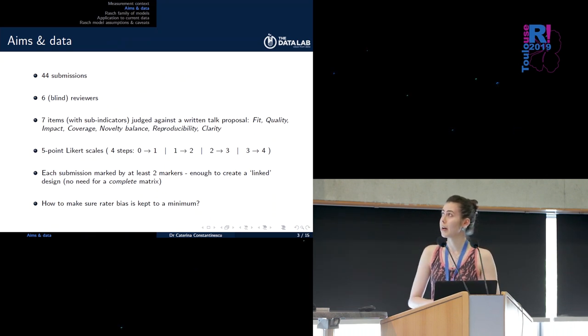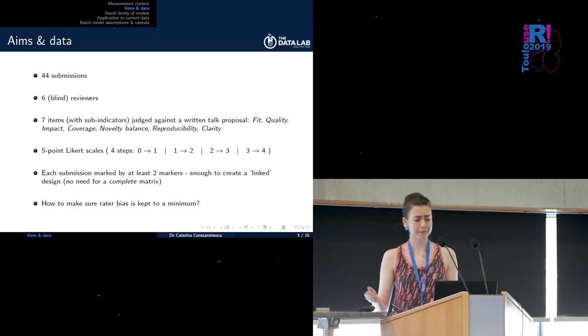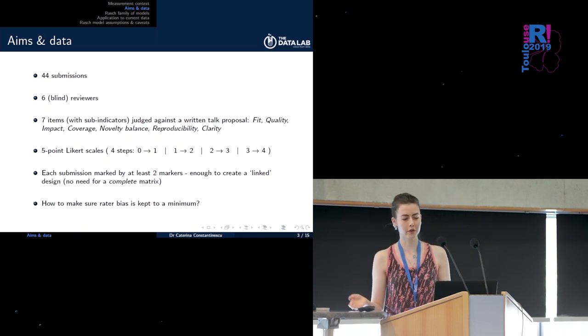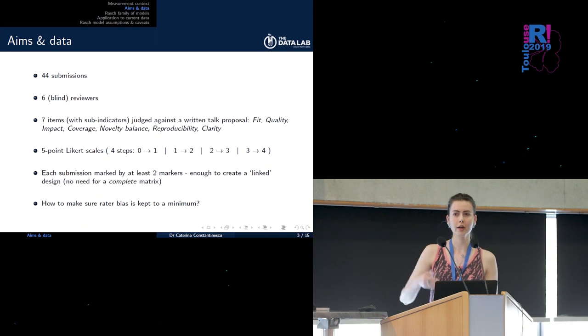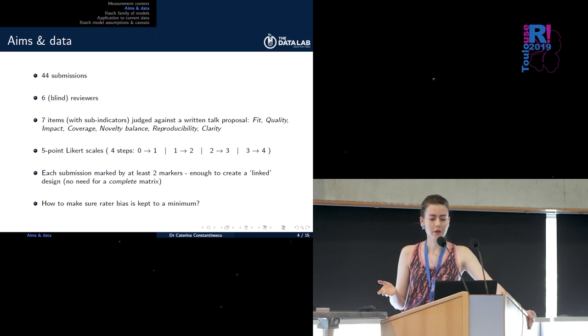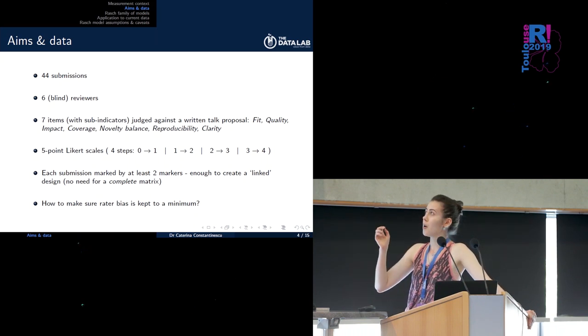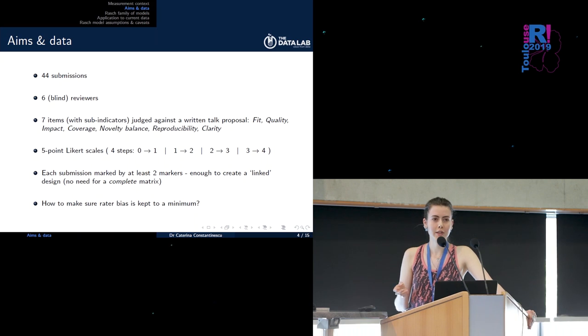With each of these criteria having a structure of five-point Likert scales, therefore implicitly including four steps of increasing difficulty, so getting from zero points to one, from one to two, and so on. So the problem we were facing with this data was how can we make sure we're selecting a sample of the best submissions but while making sure that how harsh or lenient a rater is won't really affect this process to too high an extent.